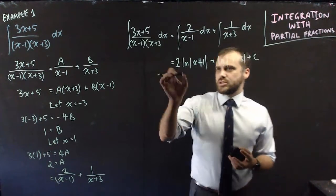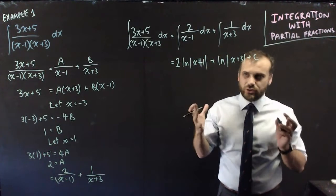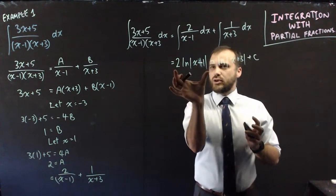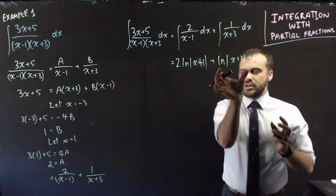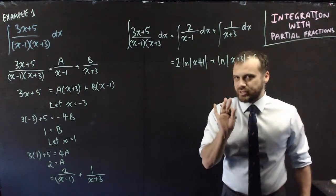I can put this 2 up here to the power of 2. That's a log law. And then I'm going to have log plus another log, which means that I can multiply those in a single log. So it ends up looking a little more like this.